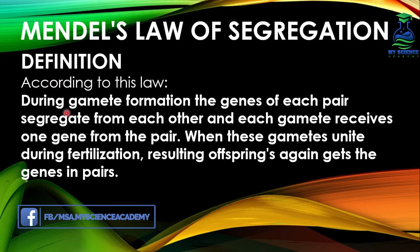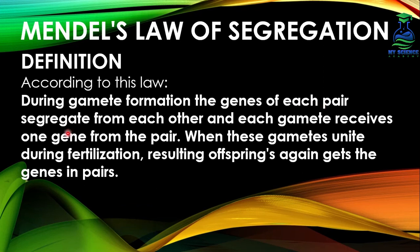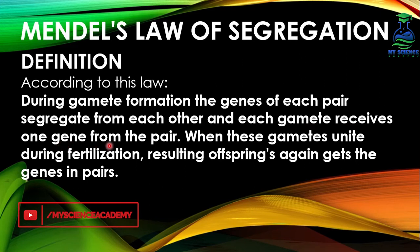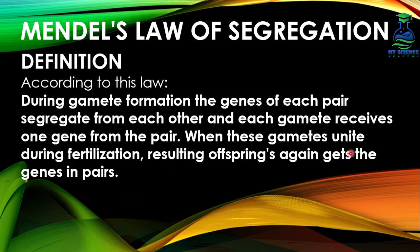According to this law, during gamete formation, the genes of each pair segregate from each other and each gamete receives one gene from the pair. When these gametes unite during fertilization, the resulting offspring again gets the genes in pairs.